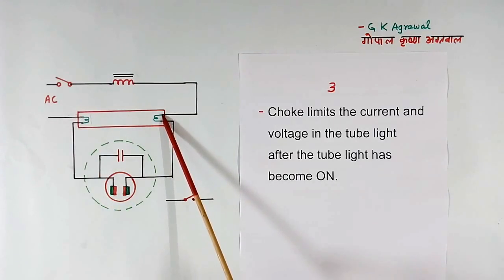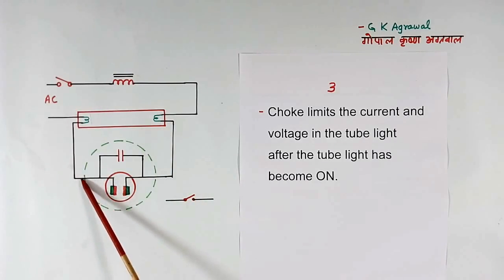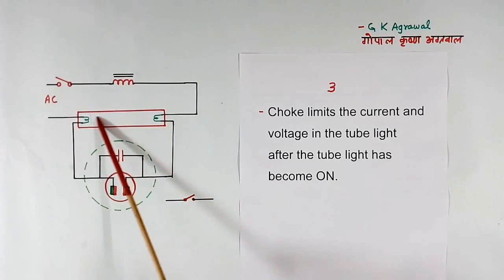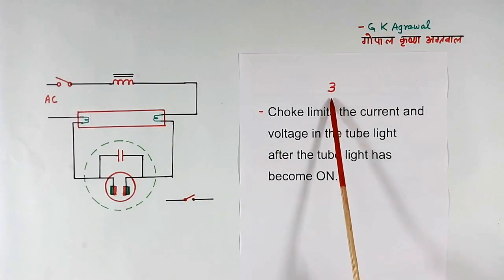So I have told you three functions. First function was limiting the current in this starter. Second function was to generate the high voltage across tube light. And third function is to limit the current flowing across this tube light. These all three functions happen in sequence, one by one. First function happens first, second function happens second, and the last one happens in the last.